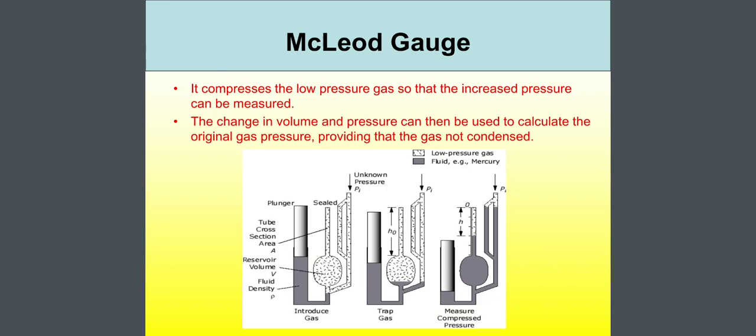McLeod gauge. It compresses the low pressure gas so that the increased pressure can be measured. The change in volume and pressure can then be used to calculate the original gas pressure, providing that the gas not condensed. Look at the figures. There are the introduced gas, trap gas as well as the measure compressed pressure. You can see here there, the colors. The white colors are low pressure gas and the black colors is for fluid like mercury. The unknown pressure is PI. There are the plungers and sealed, tube cross section area A, reservoir volume V and fluid density rho.